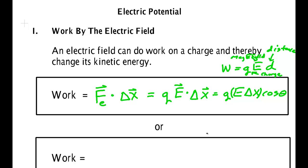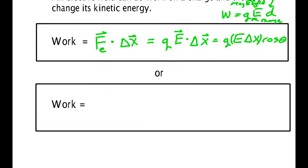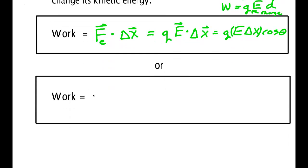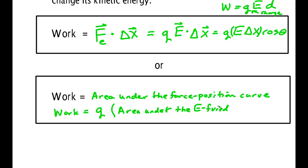In those problems where it doesn't simplify because the electric field is changing and therefore the force is changing, then it's usually better to work under the area under the curve. In this case, we say that the work is equal to the area under the force position curve. This is the same thing that we had back in chapter 6. However, I'm going to rewrite it and say that the work is equal to Q times the area under the electric field position curve.